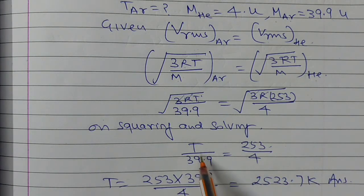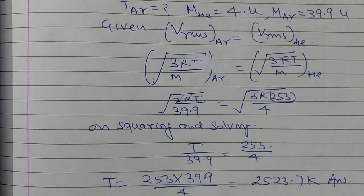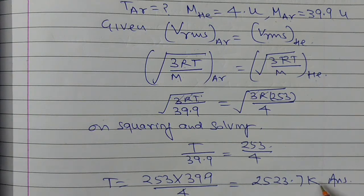Cross multiply: T equals 253 into 39.9 upon 4. Solving, this equals 2523.7 Kelvin.